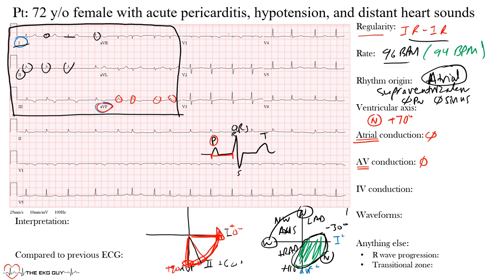For intraventricular conduction, the QRS complex was narrow at 80 milliseconds — no abnormalities with IV conduction. In adults, normal QRS duration is between 70 and 110 milliseconds, roughly two to three small boxes. Once you hit 120 milliseconds and beyond, we consider that a prolonged intraventricular conduction delay.